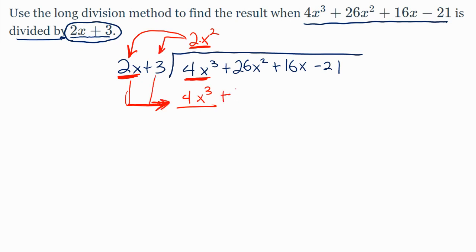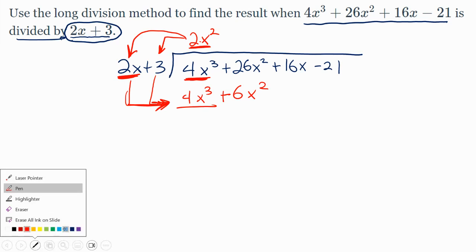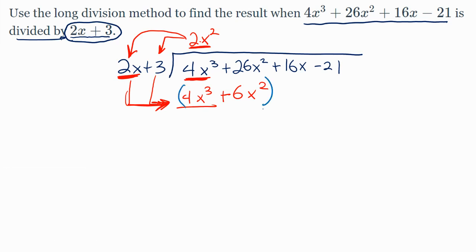Then we're in a very similar process with what we did in elementary school. The only difference is instead of just subtracting, I've been trying to emphasize you actually multiply by a negative value with this quantity. Then we take and distribute that negative into the binomial to make it a negative 4x³ and a negative 6x². The first two terms should always cancel if you did it right, so that's gone.